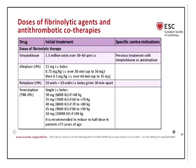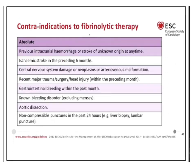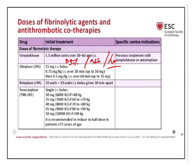For thrombolysis, the fibrinolytic agents available are streptokinase, alteplase, reteplase, and tenecteplase. Streptokinase is given as 1.5 million units dissolved in 5% dextrose or normal saline over 1 hour. Alteplase, reteplase, and tenecteplase are given at doses specified in the protocol. The patient responds to thrombolytic therapy with improvement in chest pain, reversal of ST elevation changes, and reperfusion arrhythmias.